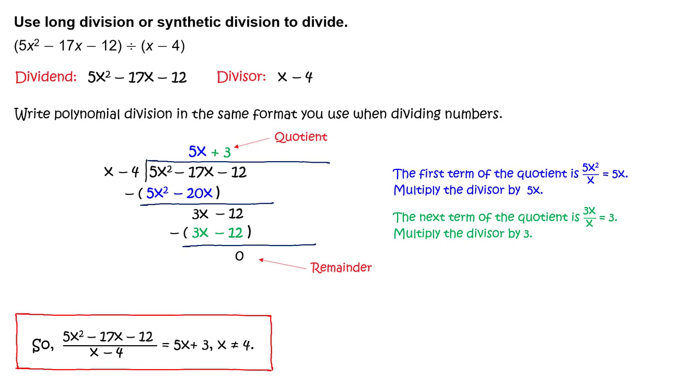You can write the quantity 5x squared minus 17x minus 12 divided by the quantity x minus 4 equals 5x plus 3. Note, because the original expression has x minus 4 in the denominator, x cannot equal 4.